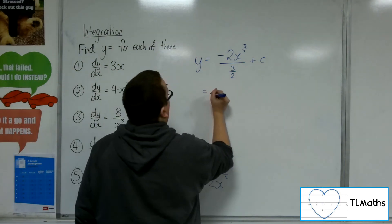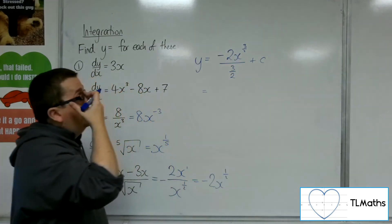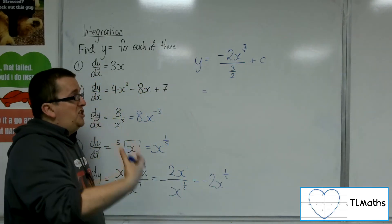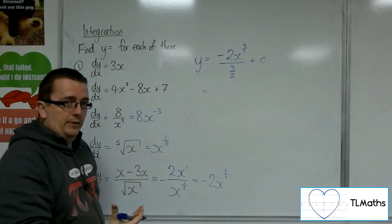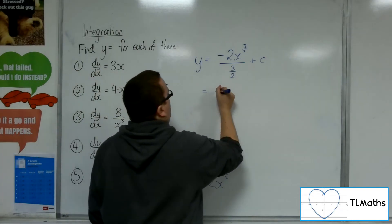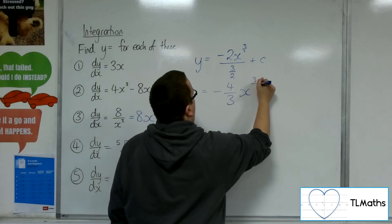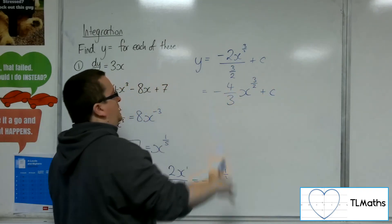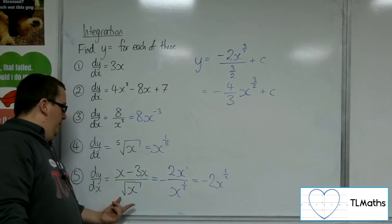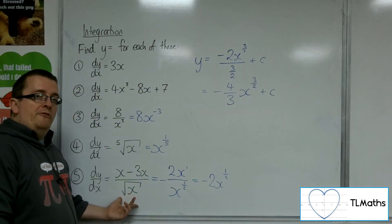Now, what I've got here is minus 2 divided by 3 halves. That's the same as minus 2 times 2 thirds, which is minus 4 thirds. x to the 3 halves plus c. So that is the general solution for the differential equation in number 5.